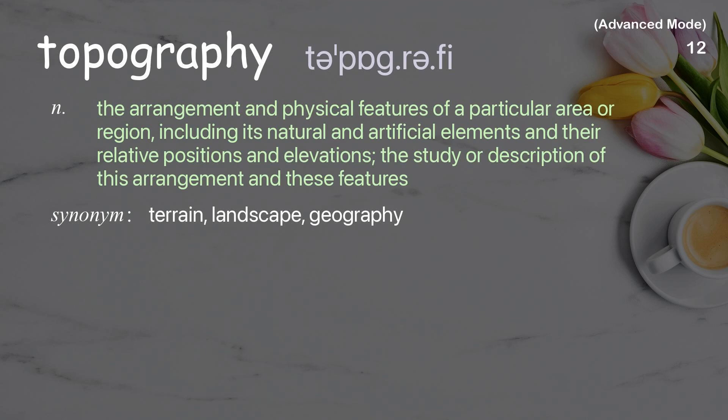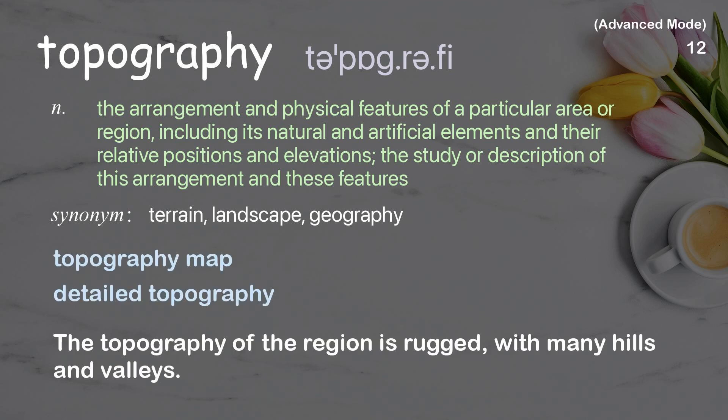Topography. The arrangement and physical features of a particular area or region, including its natural and artificial elements and their relative positions and elevations. The study or description of this arrangement and these features. Examples: Topography map. Detailed topography. The topography of the region is rugged, with many hills and valleys.